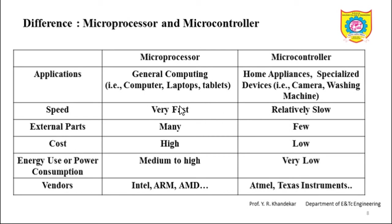In microprocessors, the number of external parts used is many. As we saw earlier, the peripherals are not present internally in a microprocessor, so we have to externally connect them for a particular application. But that is not true in case of a microcontroller — the peripherals are inbuilt and internally present. That is why external parts in a microcontroller are few.